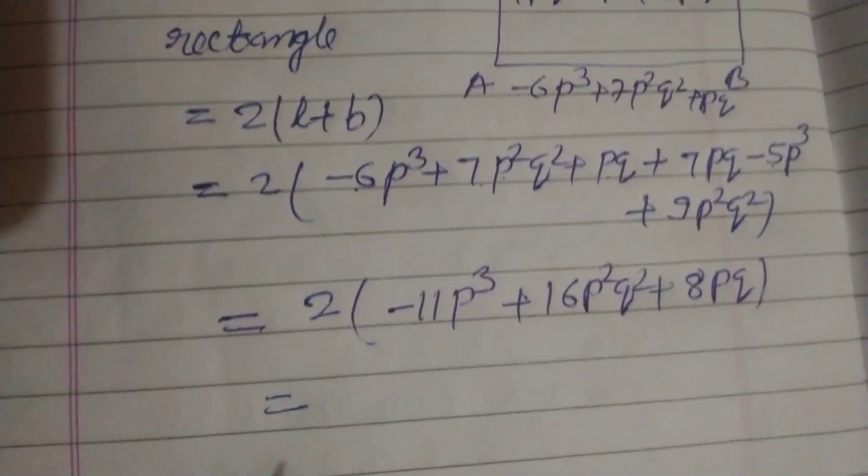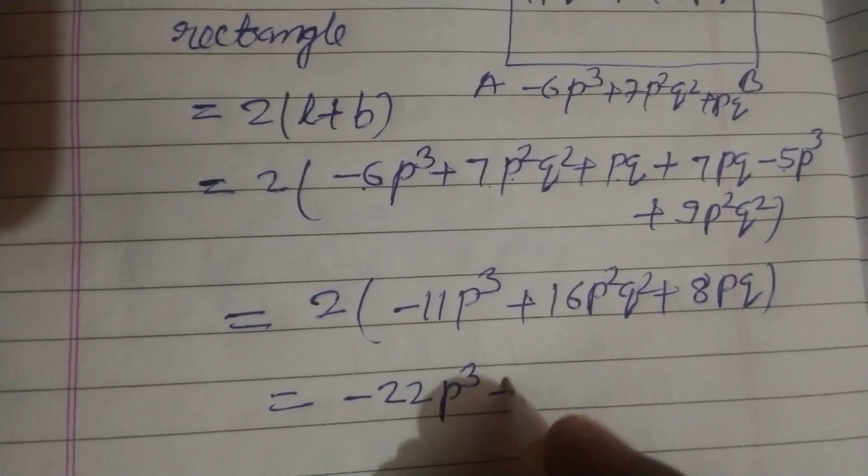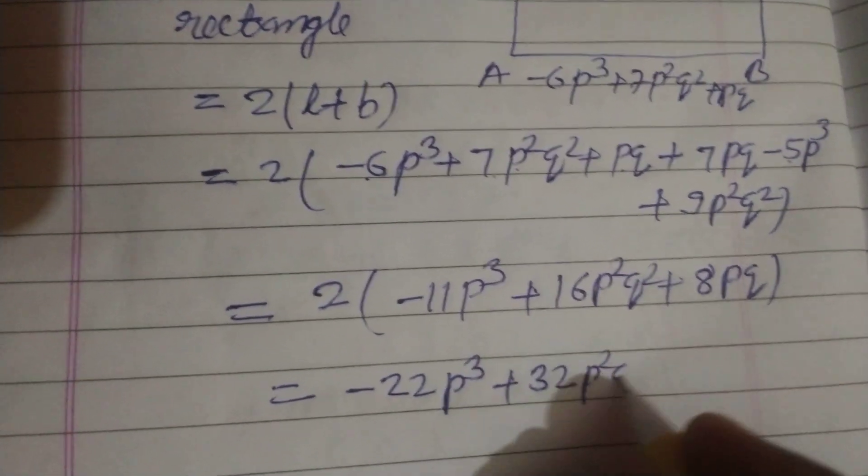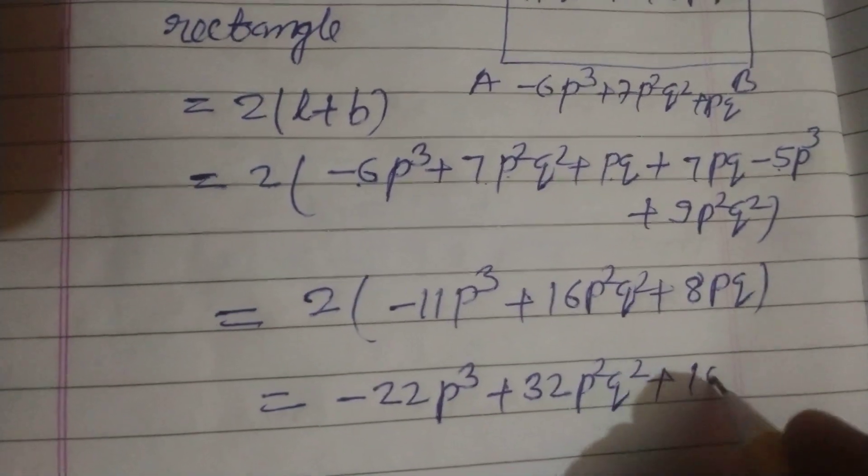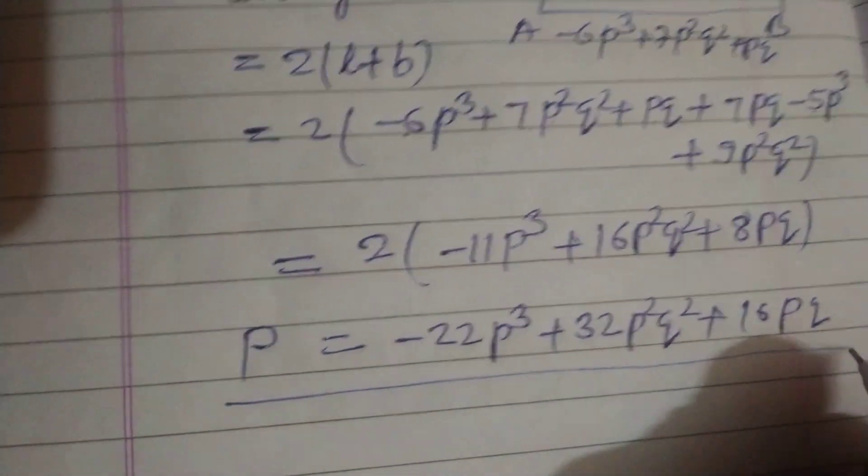Now we multiply this by 2. So -22P³ + 32P²Q² + 16PQ. This is the perimeter of the rectangle.